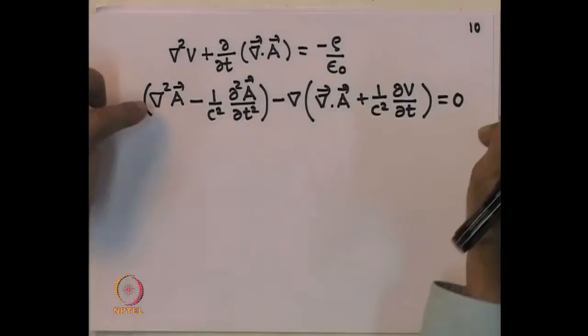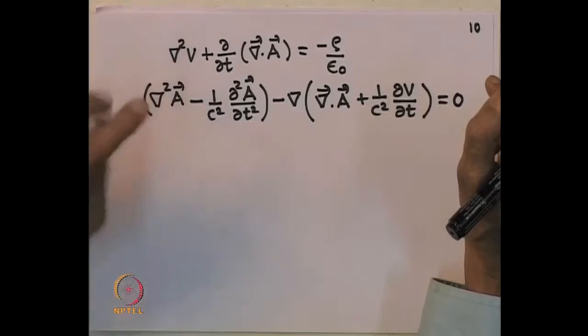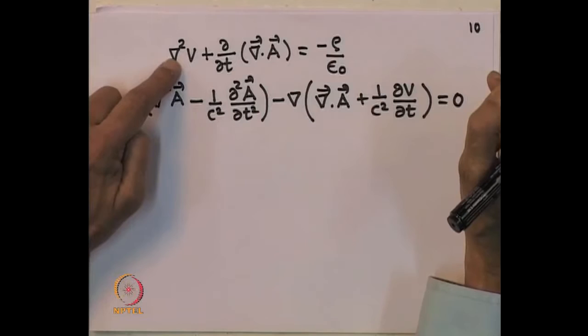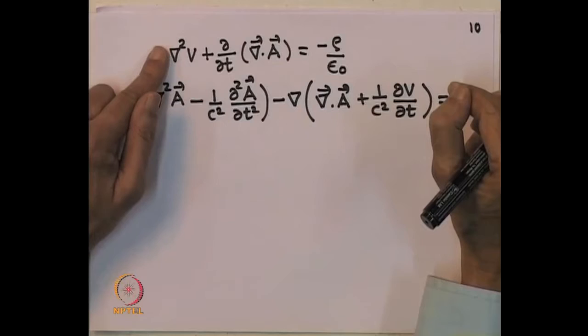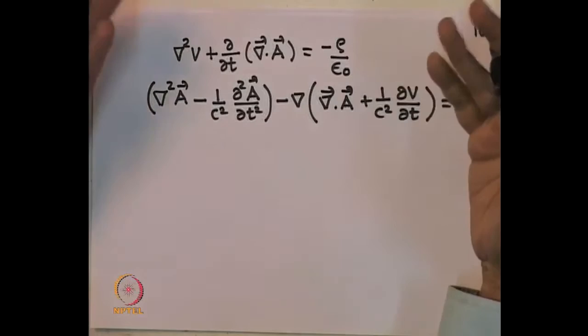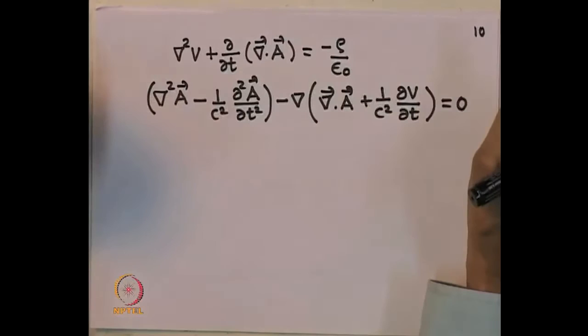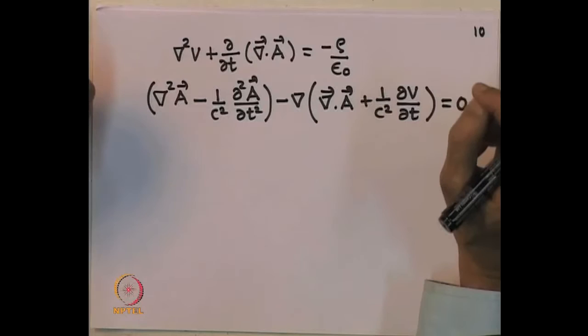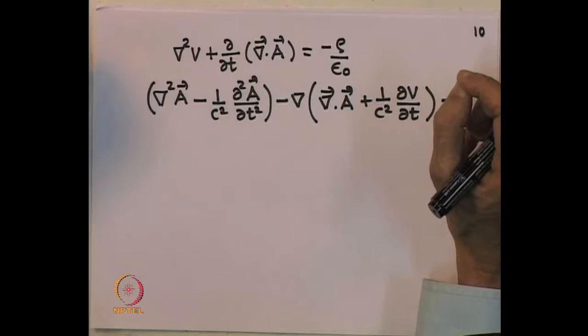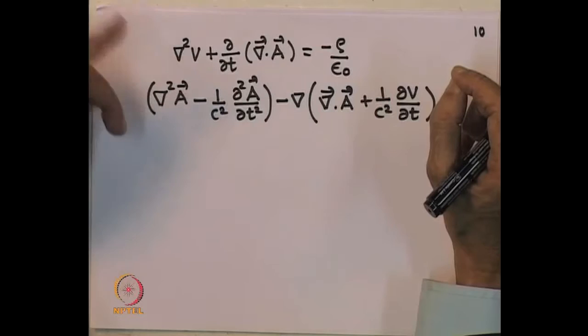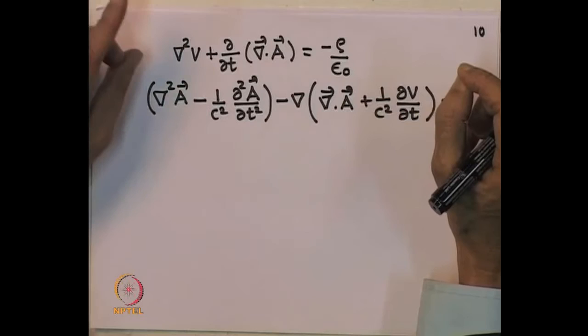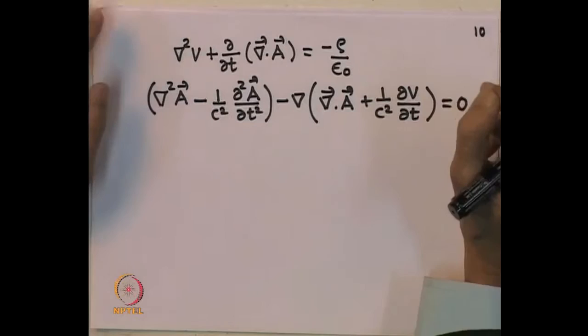So we have two equations: del squared V plus d/dt(del dot A) equals minus rho/epsilon_0, and del squared A minus (1/c²) d²A/dt² minus gradient of (del dot A plus (1/c²) dV/dt) equals minus mu_0 J. These equations are not decoupled — both contain V and A. However, the advantage is that instead of four equations in six quantities, we now have two equations in four quantities: the three components of vector potential A and the scalar potential V.